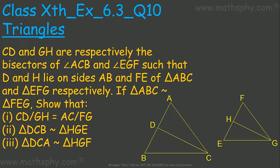This question says CD and GH are respectively the bisectors of angle ACB and angle EGF, such that D and H lie on sides AB and FE inside triangles ABC and FEG. Given that triangle ABC is similar to triangle FEG, we have to show three items.